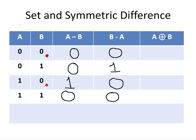Now, as I said before, we can consider A circle plus B, or the symmetric difference of A and B, as the union of the two set differences here. So we could get a union of these two columns here. So 0 and 0, the union of that is 0. 0 and 1, the union of that is 1.